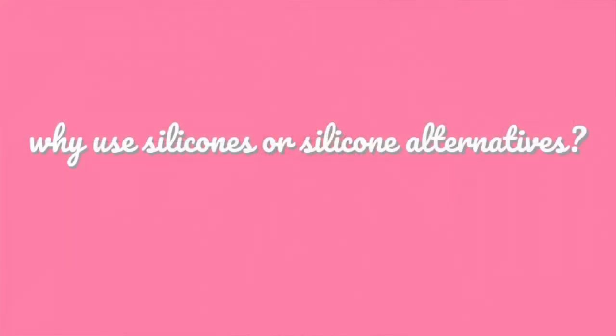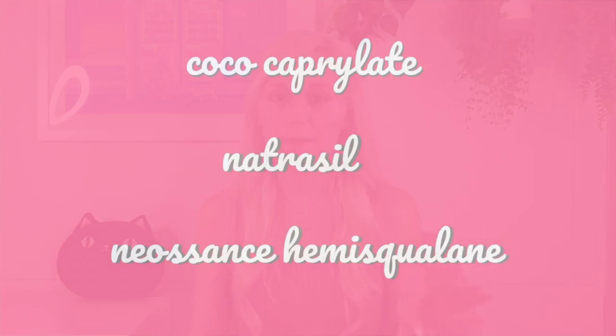So why would you use silicones or silicone alternatives? They create a more dry, non-greasy feeling to the product. Oils can be really greasy and sticky and uncomfortable on the skin, and no matter how much blending you do, you may never find the perfect balance. Silicones and silicone alternatives make your facial oils feel a lot more luxurious. The three silicone alternatives I really like — the only three I've ever used — are coco caprylate, natricell, and neoessence hemi-squalane. They're all eco-cert, considered natural, and grain-friendly, and these three ingredients can really make a facial oil feel much more pleasant.